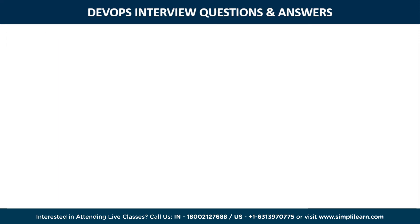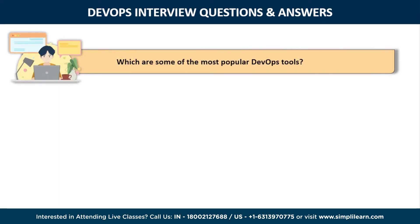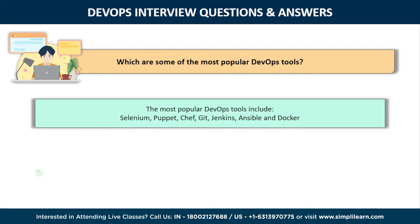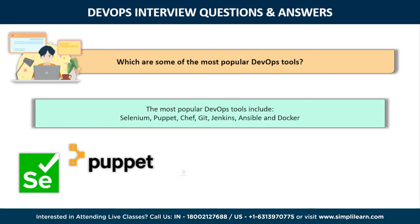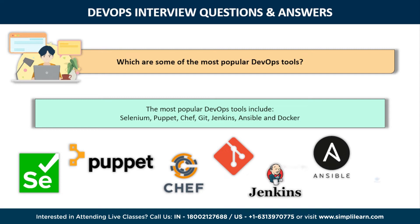The second question is: which are some of the most popular DevOps tools? Some of the most popular DevOps tools include Selenium, Puppet, Chef, Git, Jenkins, Ansible, and Docker, which are considered really important in today's world if you want to become a successful DevOps engineer.